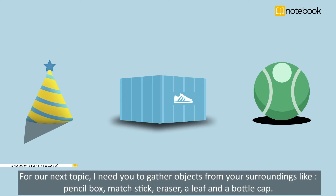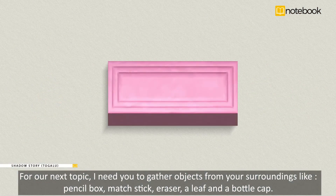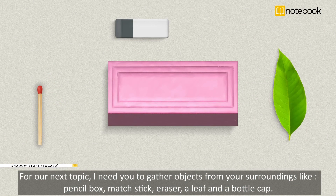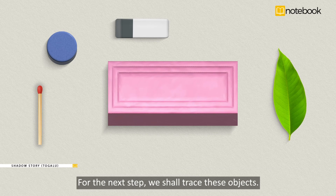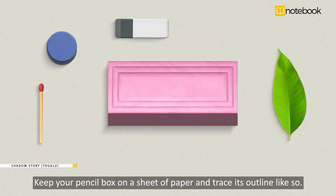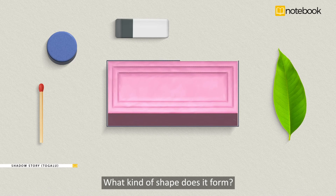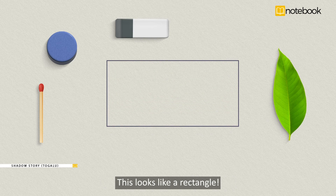For our next topic, I need you to gather objects from your surroundings like a pencil box, matchsticks, eraser, a leaf, and a bottle cap. For the next step, we shall trace these objects. Keep your pencil box on a sheet of paper and trace its outline like so. What kind of shape does it form? This looks like a rectangle.